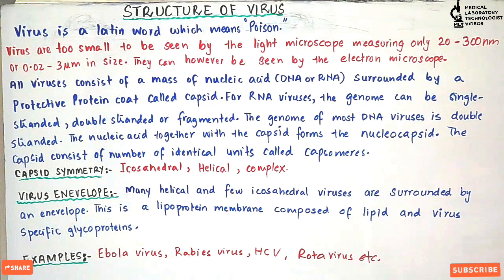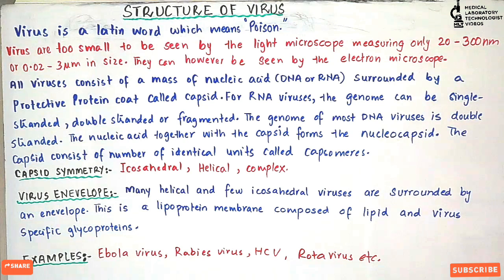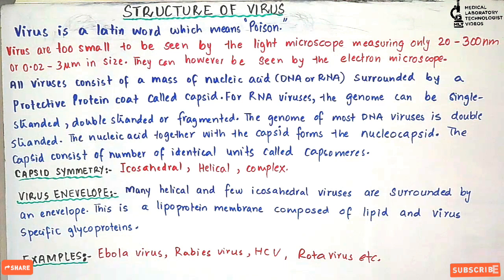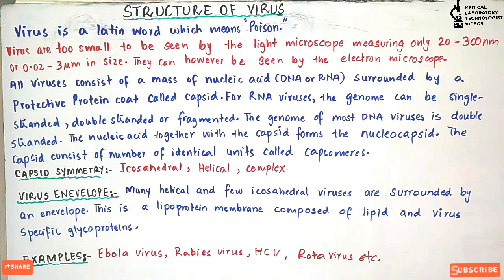All viruses consist of a mass core of nucleic acid — the genome or genetic material — which will be either DNA or RNA. That nucleic acid is surrounded by a protective protein coat that we call the capsid. For RNA viruses, the genome can be either single-stranded, double-stranded, or fragmented.